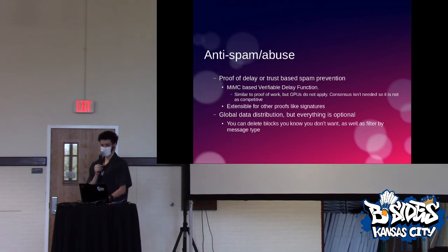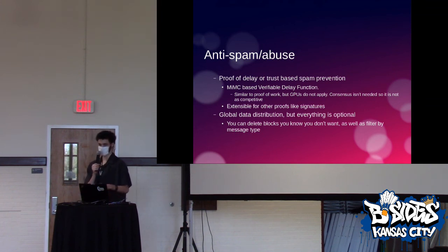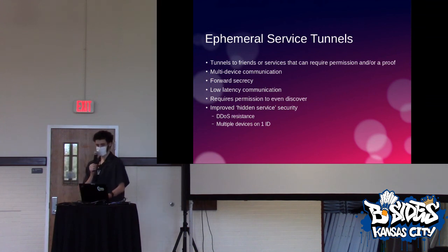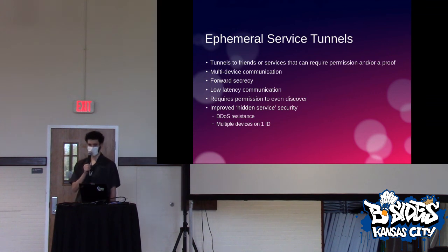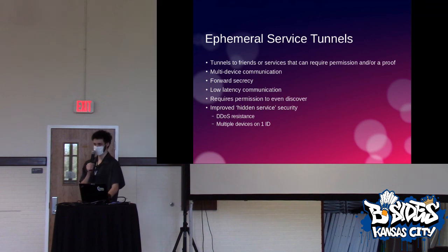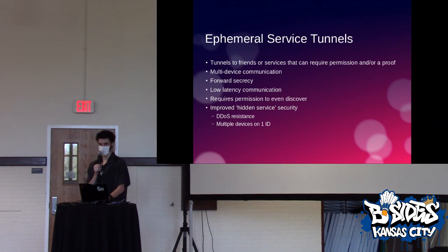By default, everything gets synced to every node, but I've added the ability to filter by types of content — so if you're only interested in mail, you can pick that, for example. I've also added the ability to establish direct connections with your friends, which allows you to create denial-of-service-resistant hidden services that require permission to even discover. The address for a service is generated on the fly for each client, which creates high latency for the initial connection.